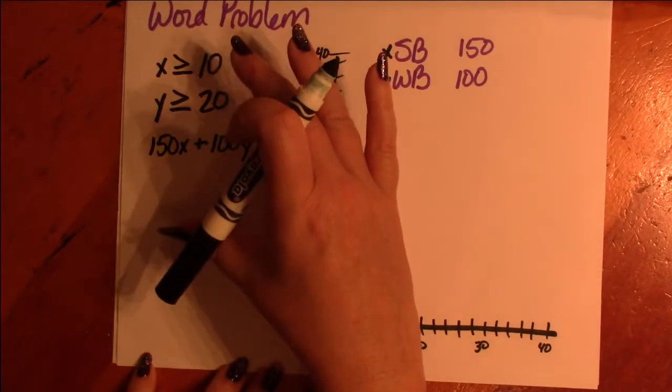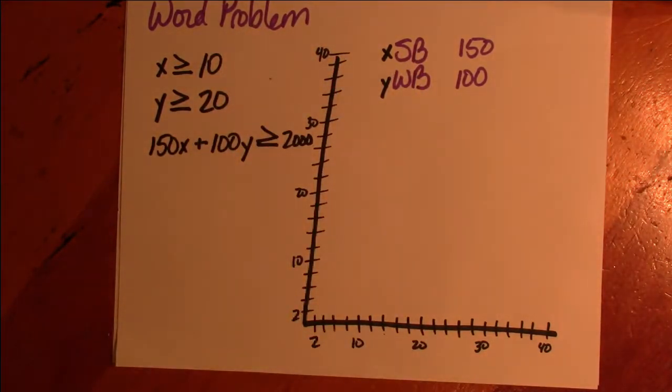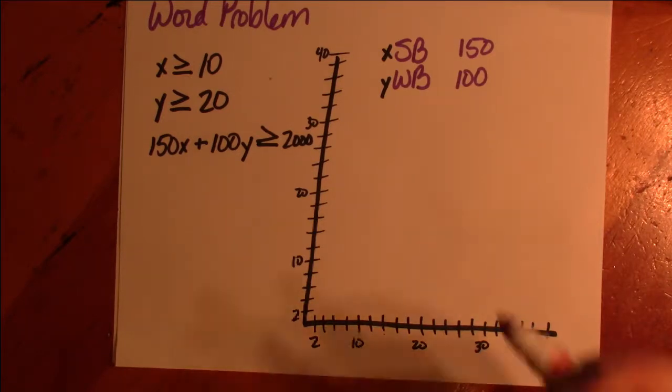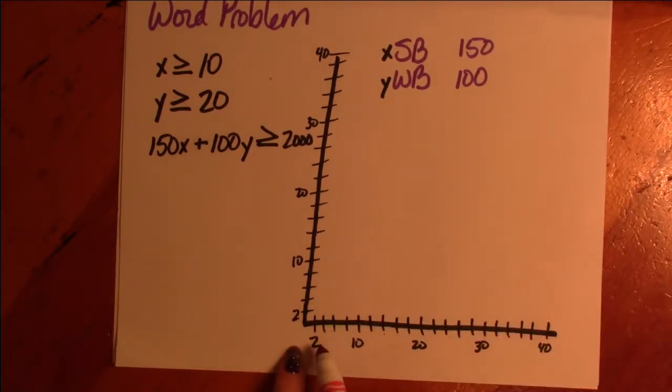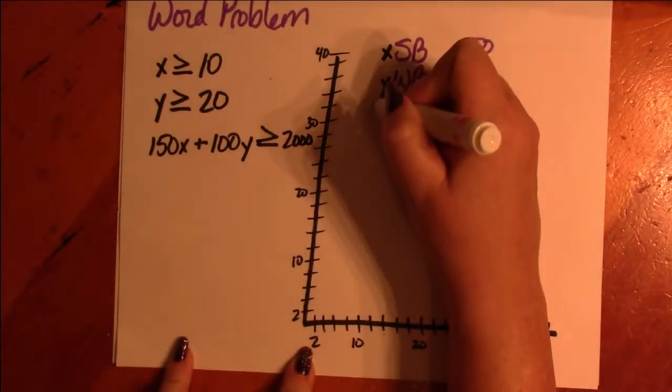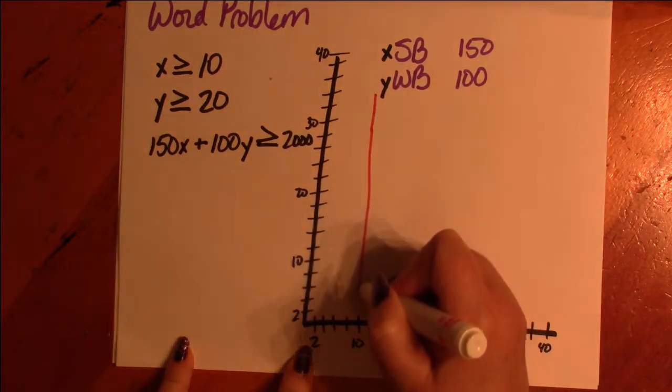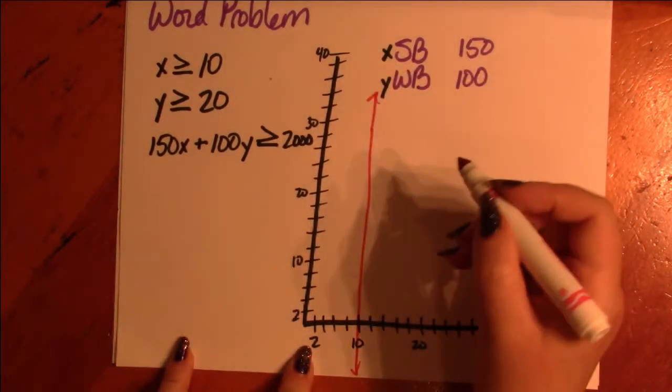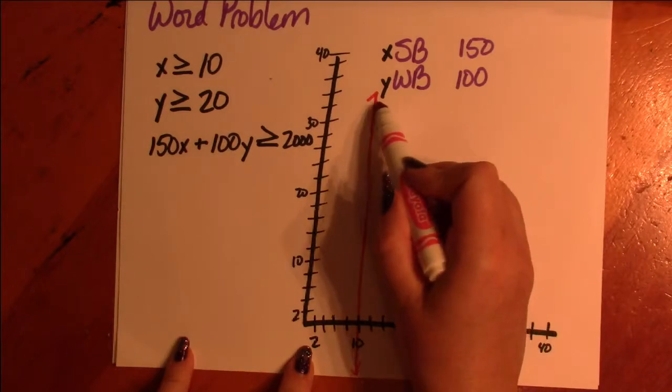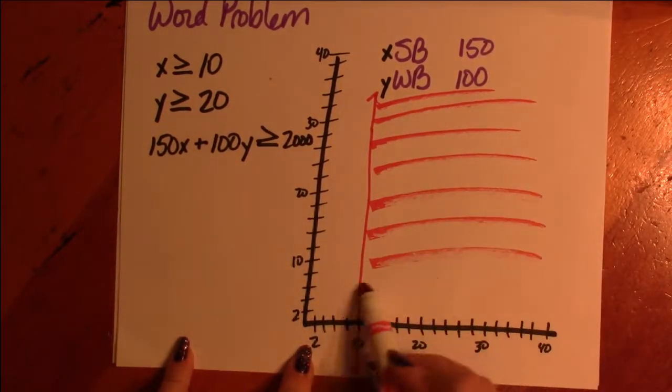So we have to graph all three of these and see where they come together. If X equals 10, then any ordered pair that we come up with has to have an X of 10, which means we're going to draw a vertical line, solid line through 10. And X has to be greater than it. So anything over here counts.